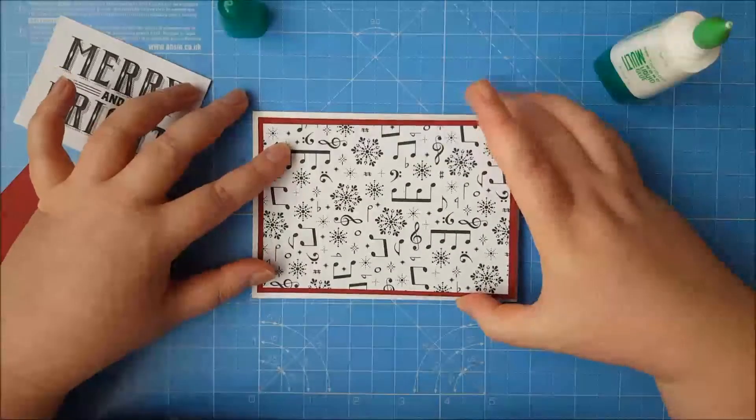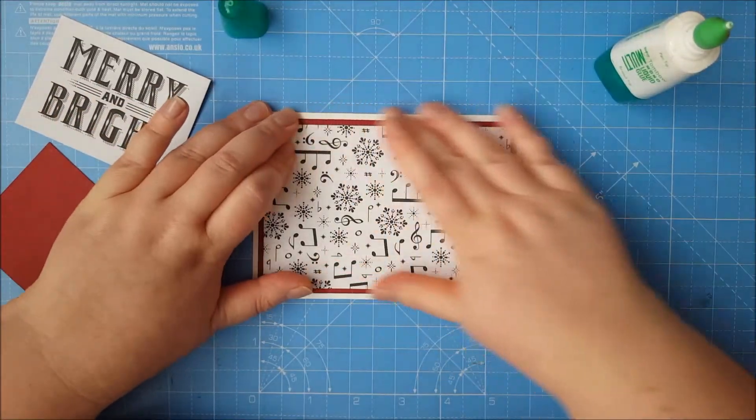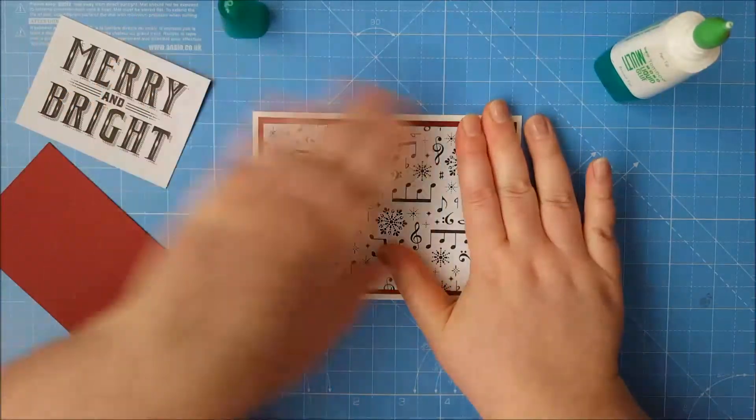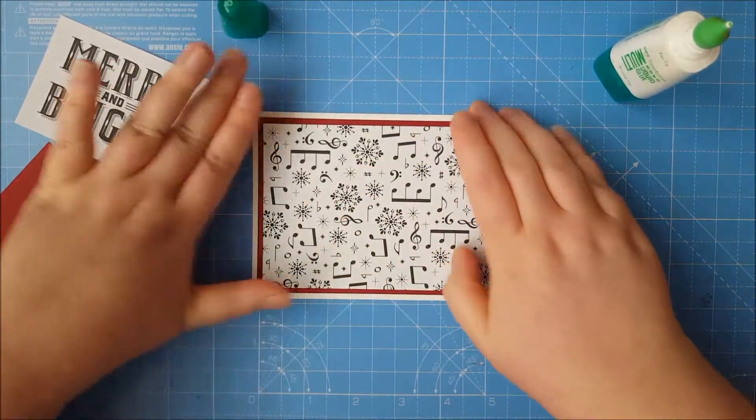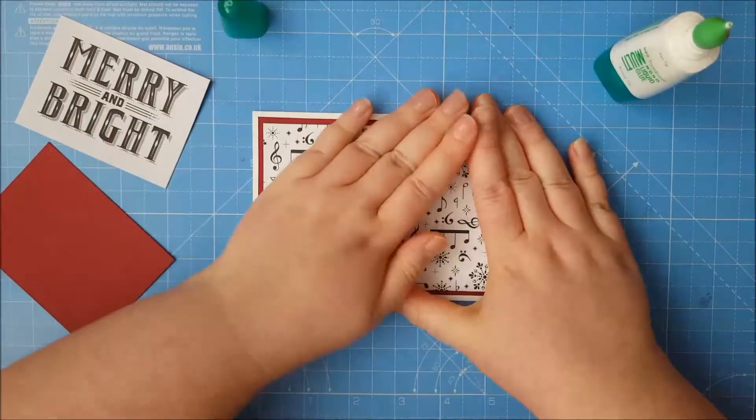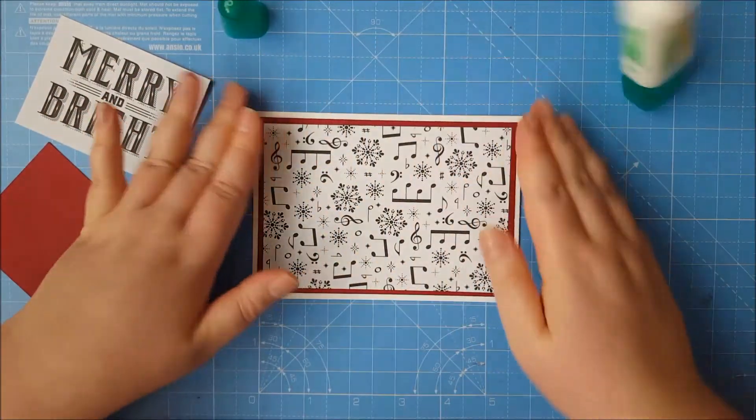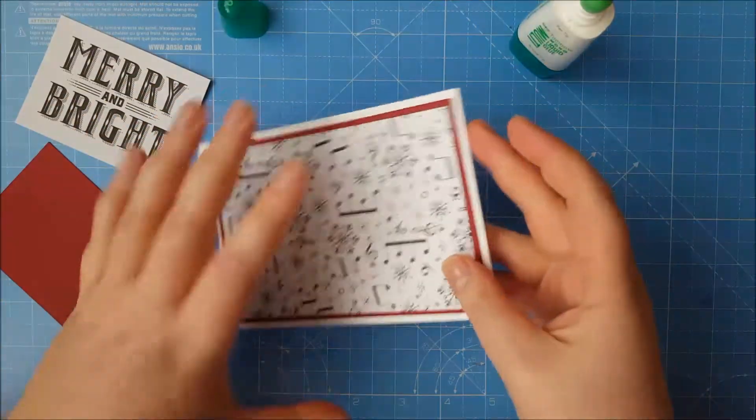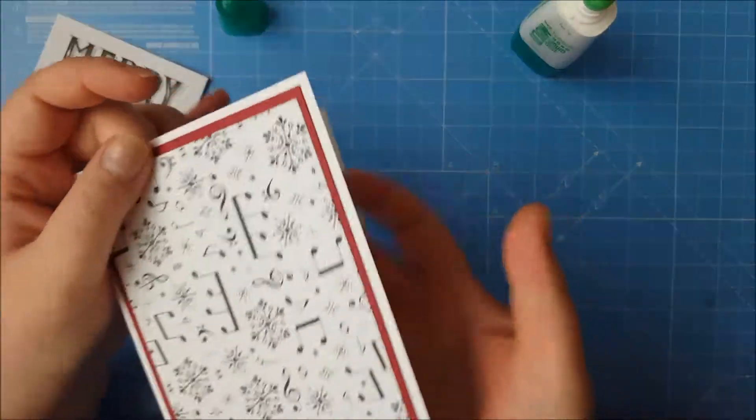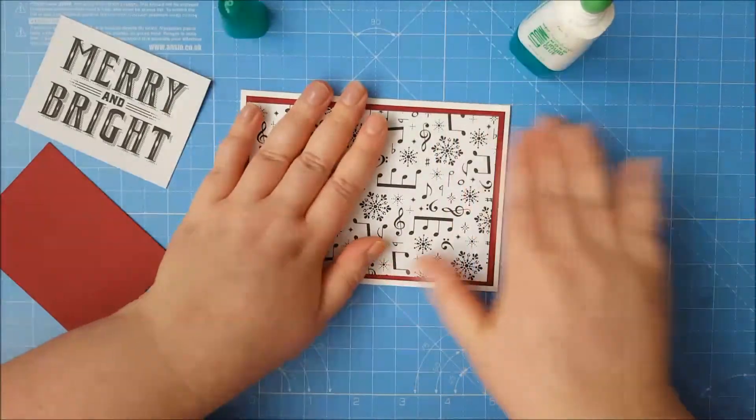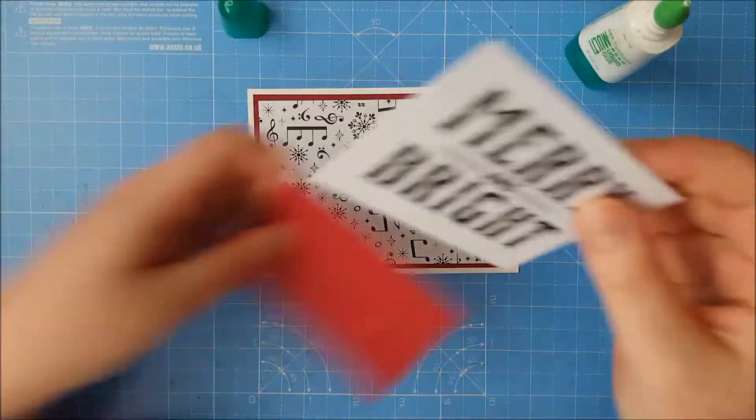And we're going to grab our Tombow and we're going to glue this panel straight down onto here. And again, leave a nice border. When you're doing a very simple card, it's nice to have the layers. I think it just helps everything pop. And it adds that extra element to it. And it also makes the card thicker. I really like when the cards feel quite sturdy and thick. It just gives that feeling that it's made really well.